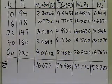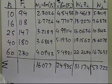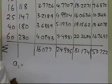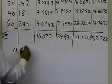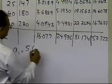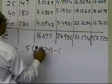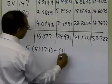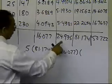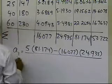Now we have all the summations available to apply them in the formula for the linear model between z and w. So a_1 is n, which is 5 data points, times the summation of w_i z_i values, which is 81.174, minus the summation of all the w values, 16.077, times the summation of z_i values, 24.935.